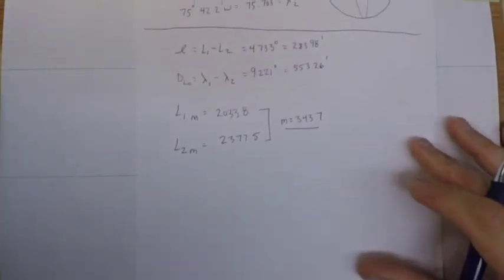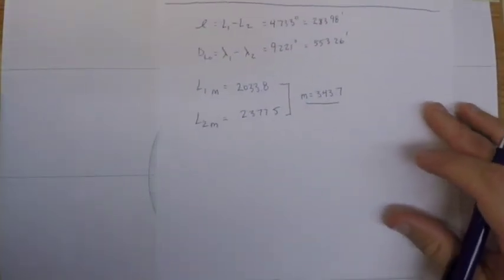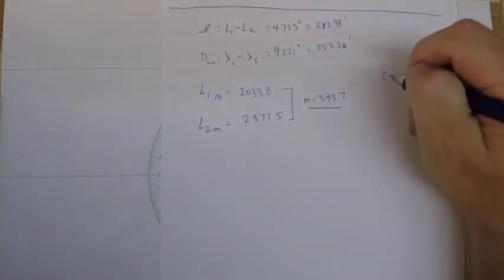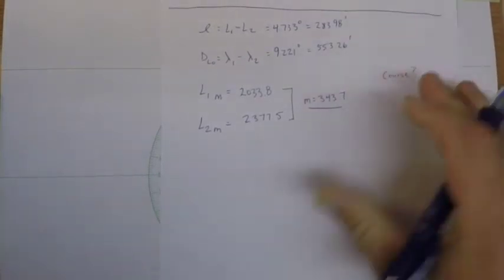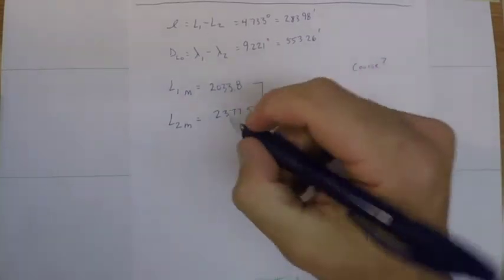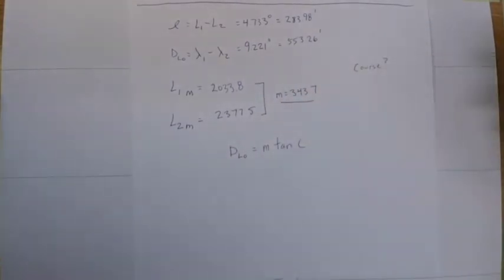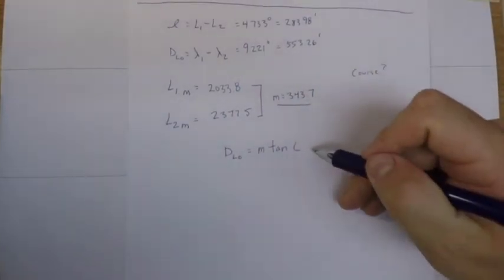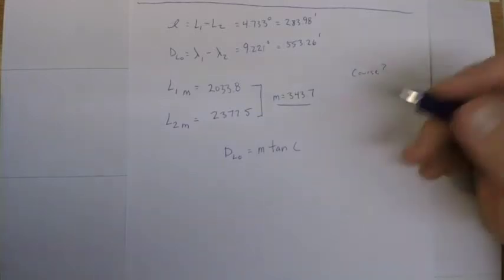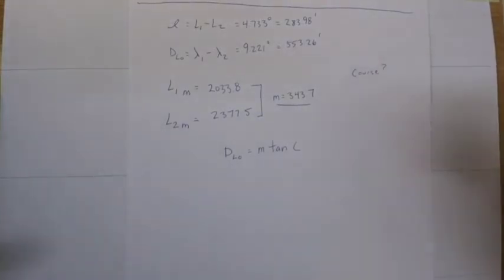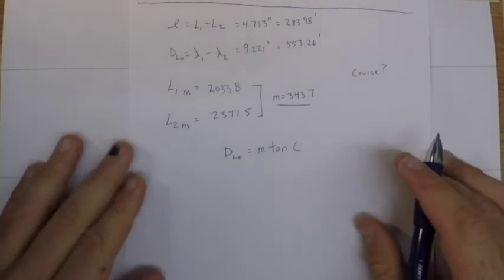So then to solve the question that they're asking for, I need to find the course. So the formula for that is going to be: difference in longitude equals meridional parts times the tangent of the course. This formula you can get in Bowditch in the sailings or in the practical navigator guide or the internet or anywhere, but it is available to you in the test room.